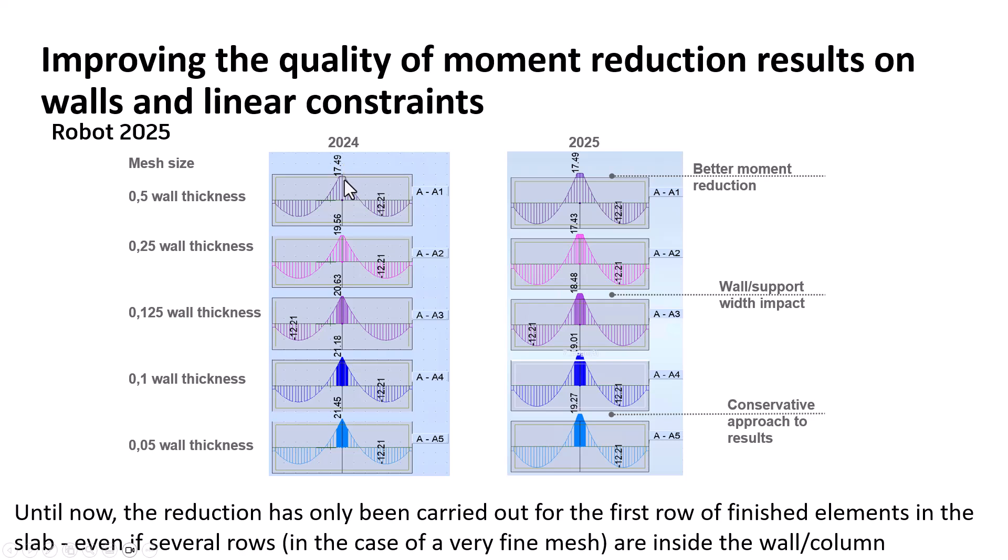So here you see it works and the reduction. It was because in 2024, usually we have bigger finite elements than half of the size of the column or wall.